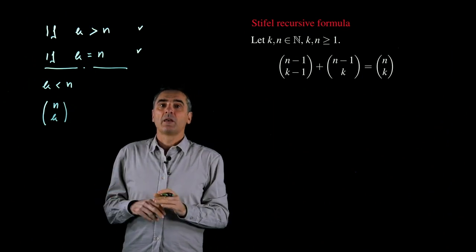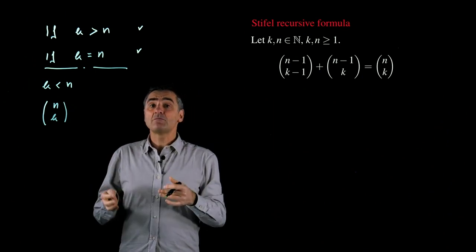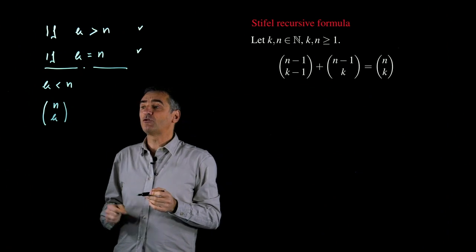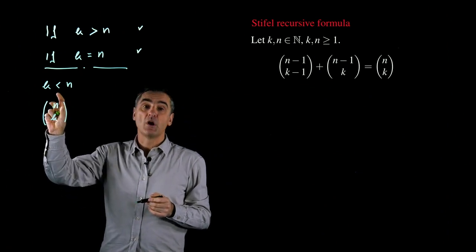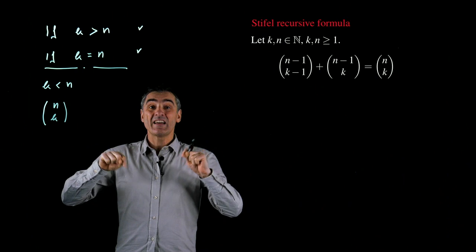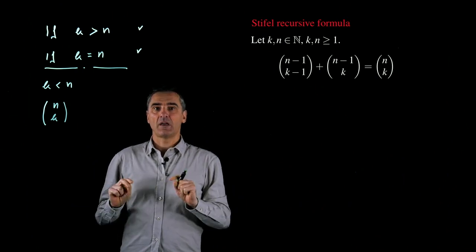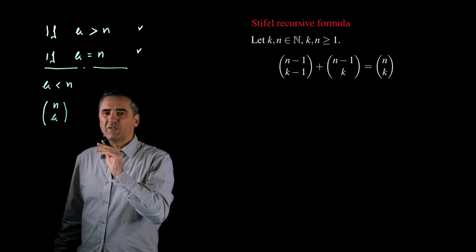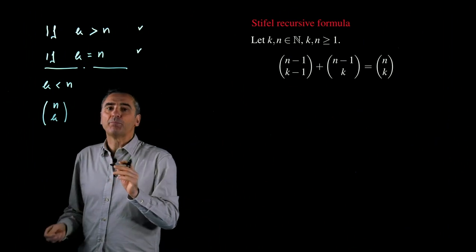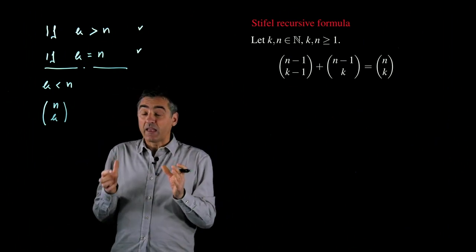We first count in how many ways we can choose k numbers among n with 1 inside. Then, which is the idea?